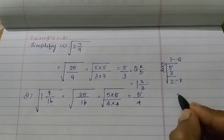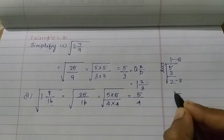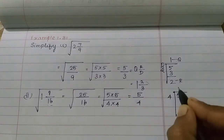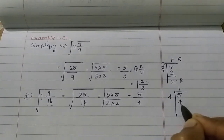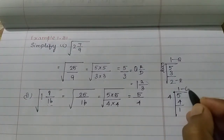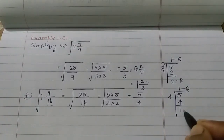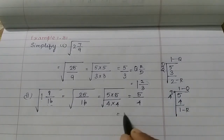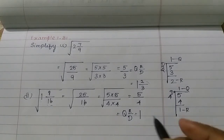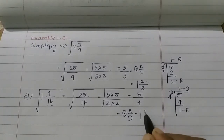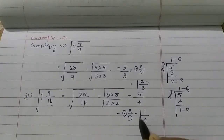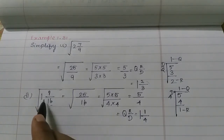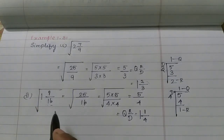Out of the square root comes 5 and 4, giving 5 by 4. Now divide: 4 ones are 4, balance 1. Quotient is 1, remainder 1, divisor 4. So 1 and 1/4 is the value of root of 1 and 9/16.